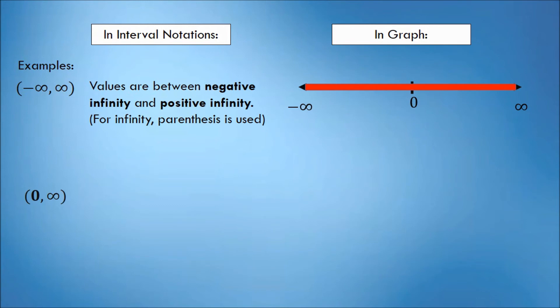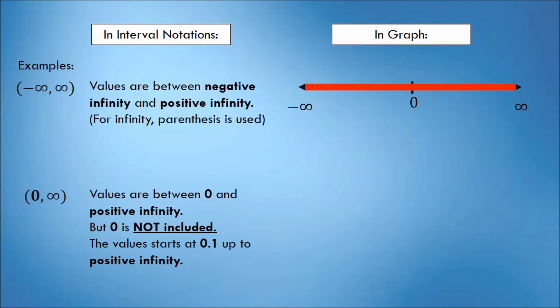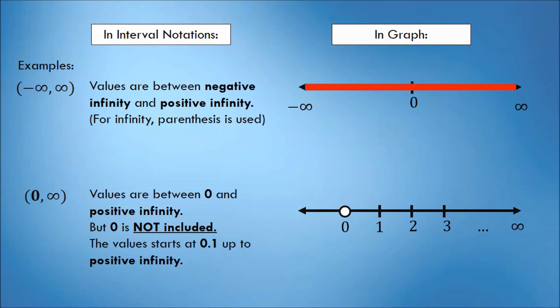Another example with infinity: suppose we have the interval (0, +∞). This interval indicates that the values included are between 0 and positive infinity, but 0 is not included because of the parenthesis symbol. Meaning, the value starts at 0.1 up to positive infinity. In the graph, we will put a hollow circle on 0 because 0 is not included. The solution set is from 0.1 up to positive infinity.